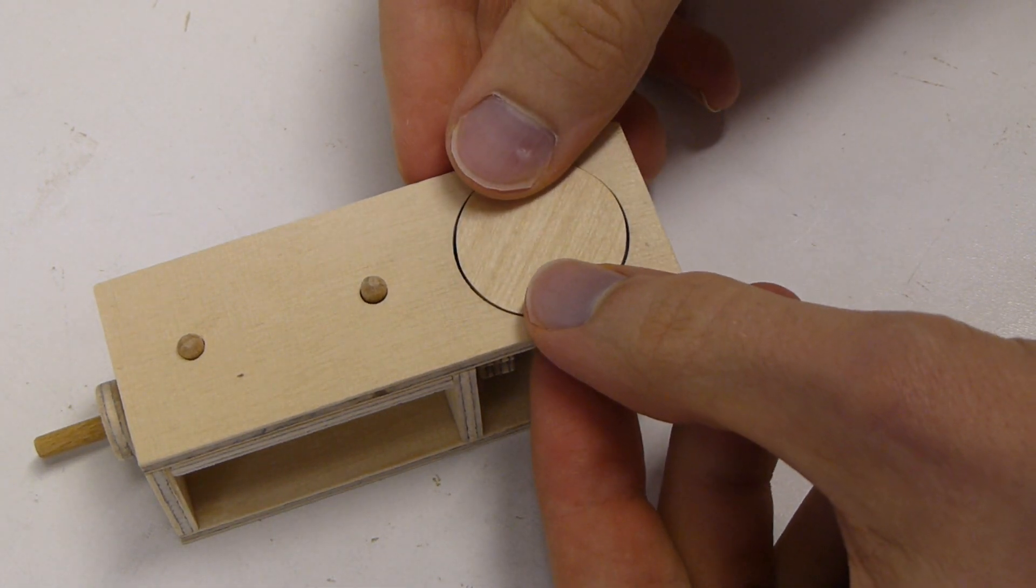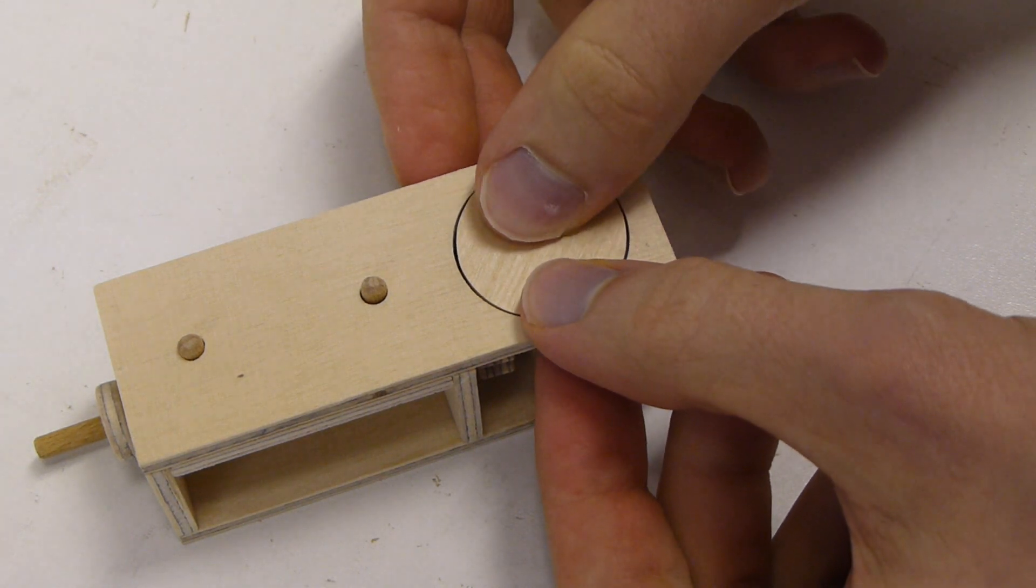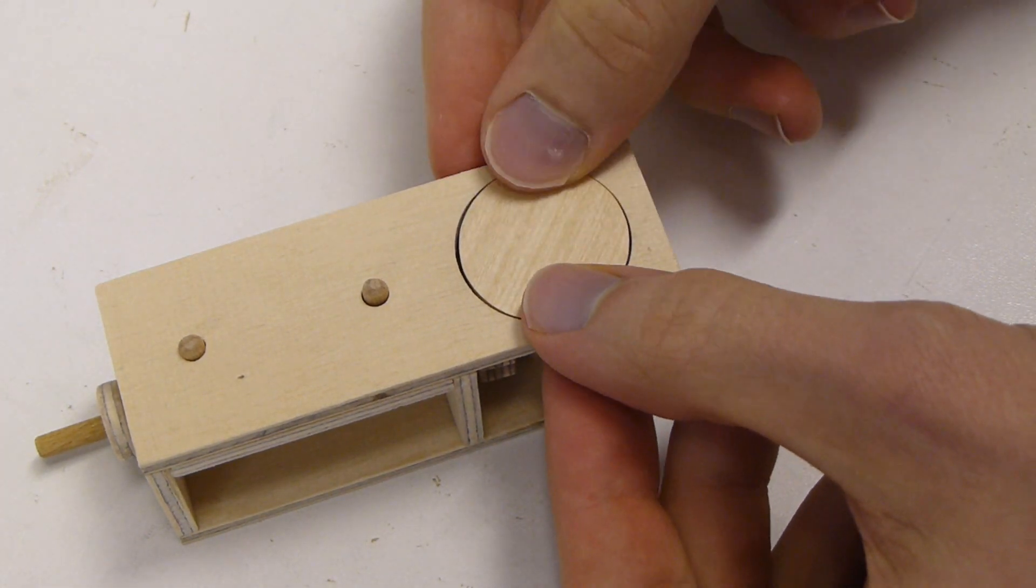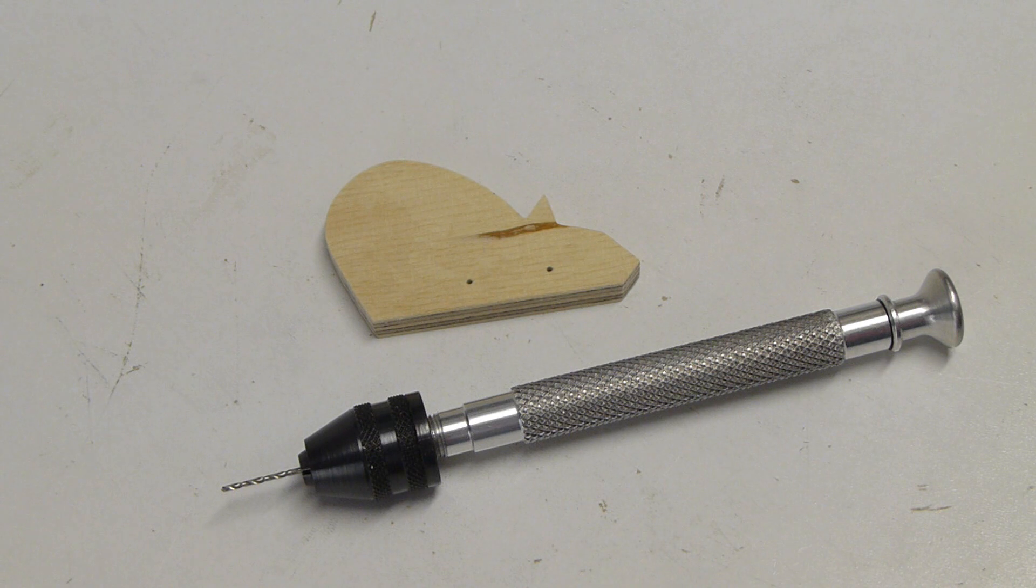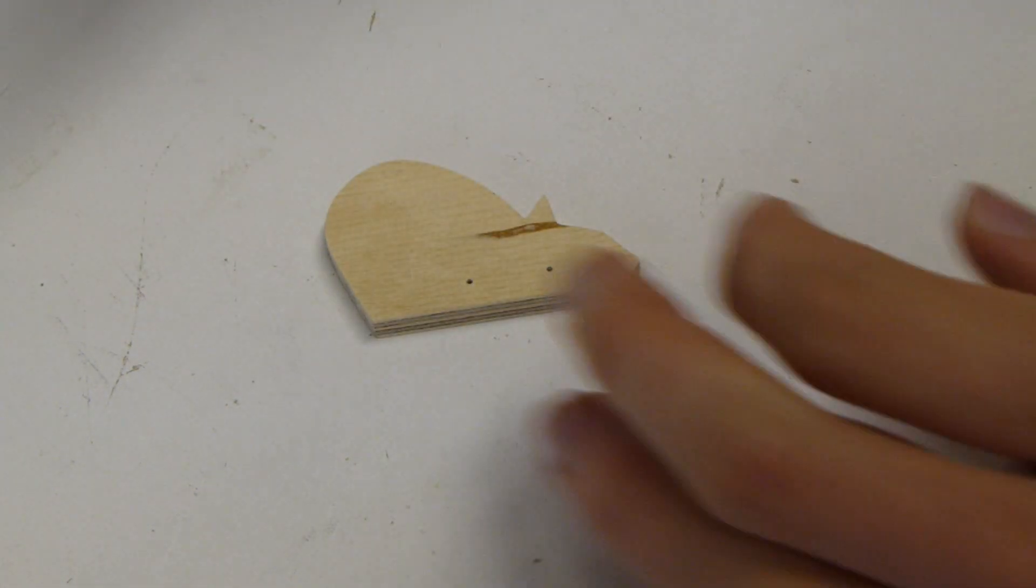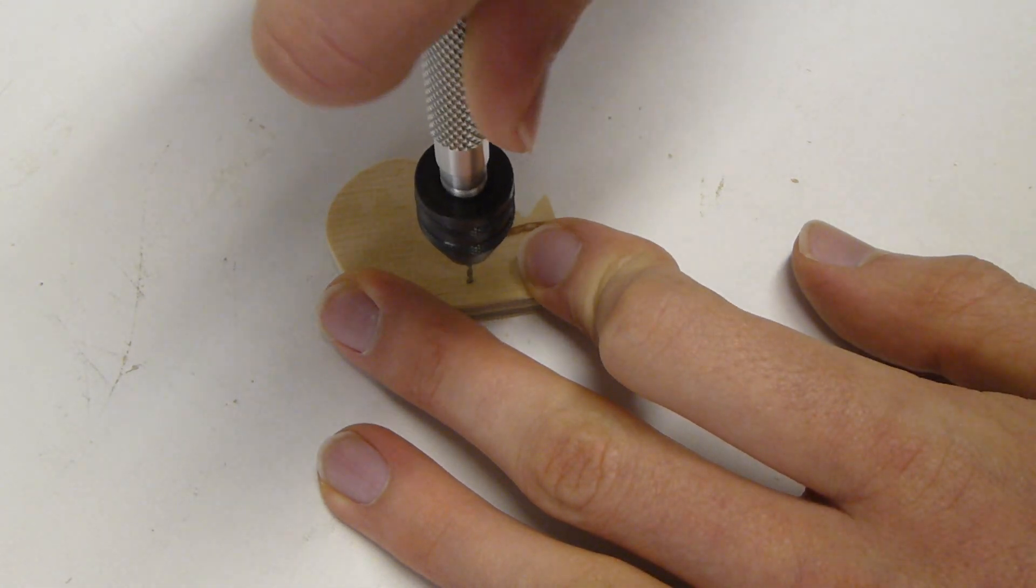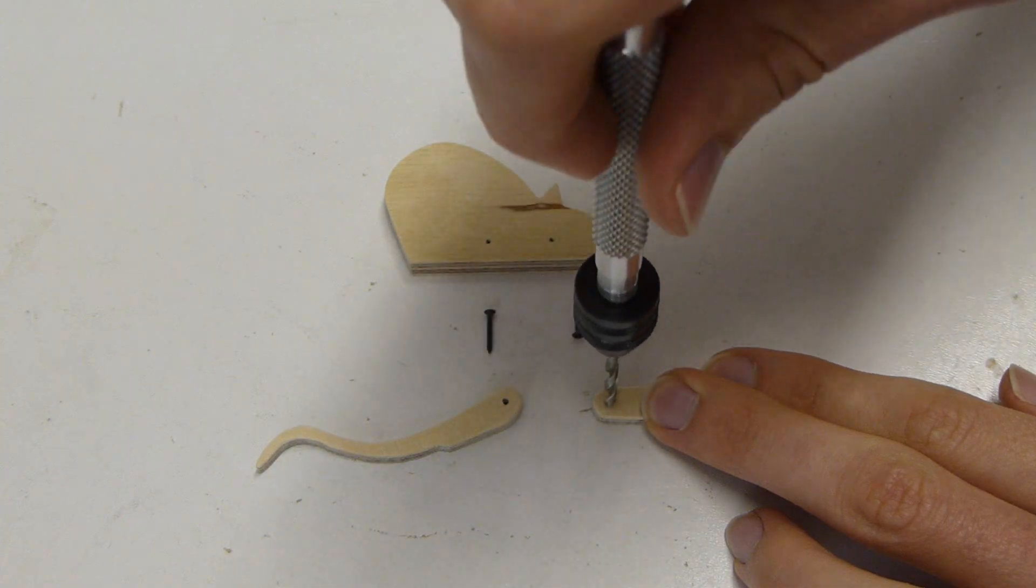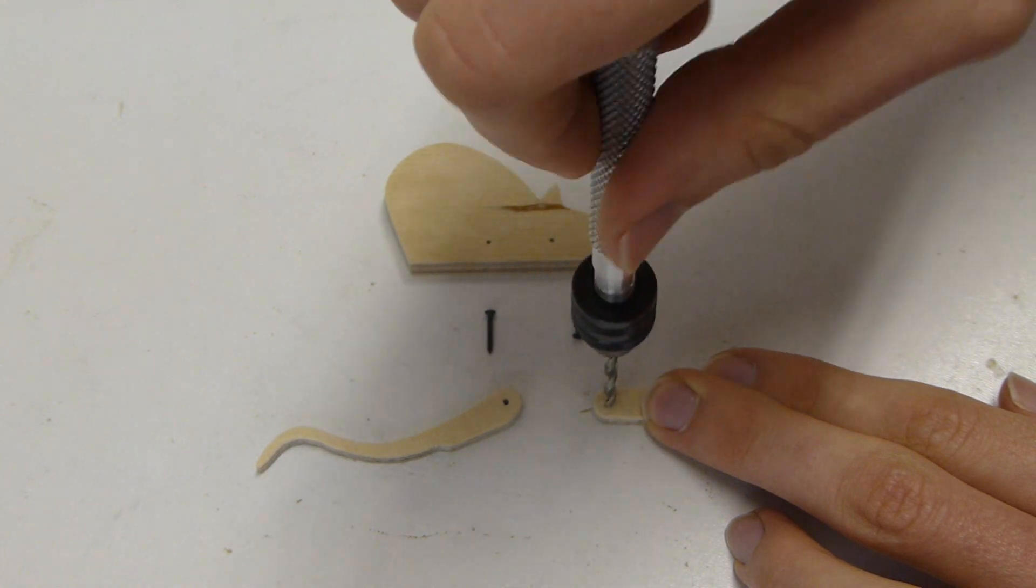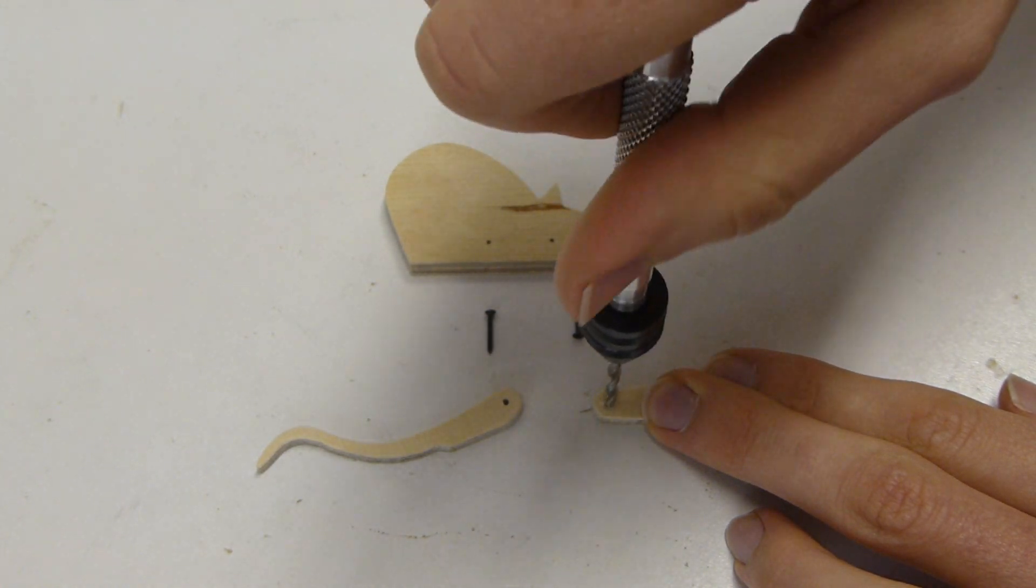Before the lid is dry, drill the small holes. The holes should be drilled carefully. The holes in Pfote and Schwanz can also be drilled with care.